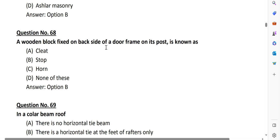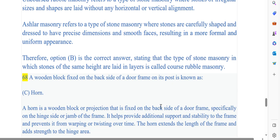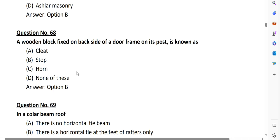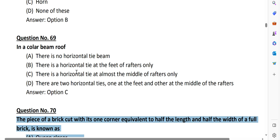The stones are irregular in shape and size but are selected to have similar height to create a more uniform appearance. The gaps between stones are typically filled with smaller stones or mortar. Random rubble masonry refers to the type of stone masonry where stones of different sizes are used without any specific pattern. Question number 68, a wooden block fixed on the backside of the door frame on its post is known as stop. Question number 69, in a collar beam roof there is a horizontal tie at almost the middle of the rafter. Option C is correct.